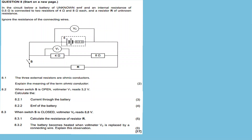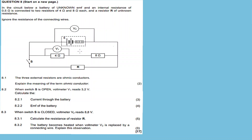In Question 8, the circuit diagram shows a battery of unknown EMF and an internal resistance of 0.5 ohm, connected to two resistors of 4 ohm and 8 ohm, and a resistor R of unknown resistance. We are told to ignore the resistance of the conducting wires — this is important, because if we consider the resistance of conducting wires, we deviate from Ohm's law.